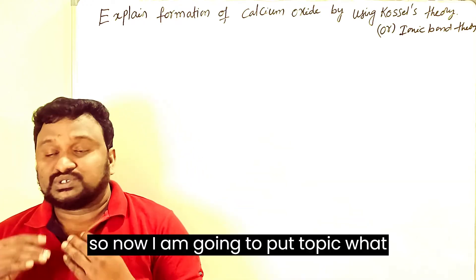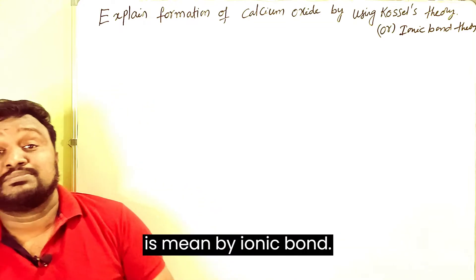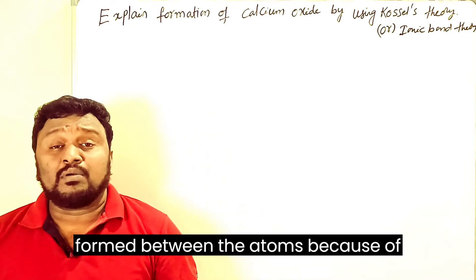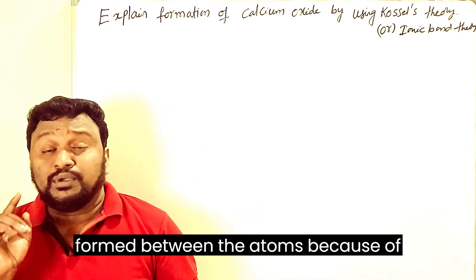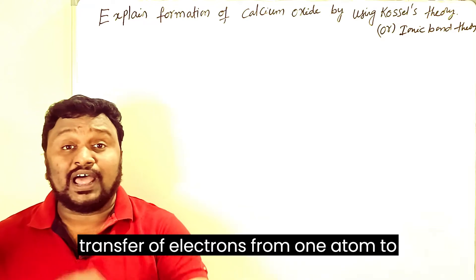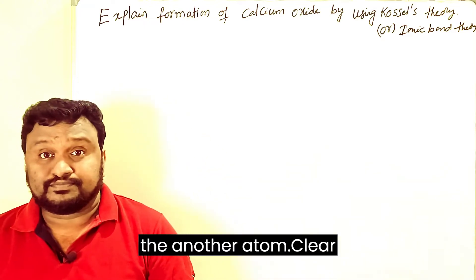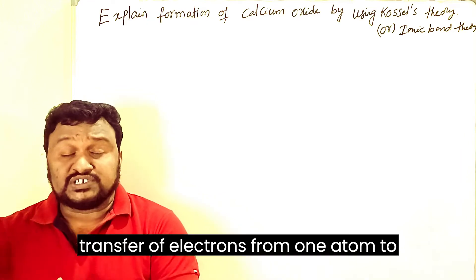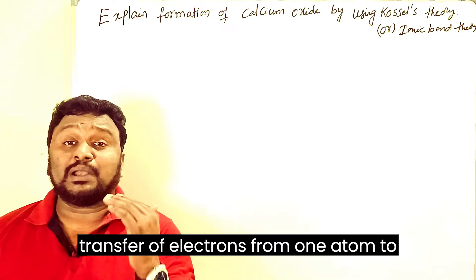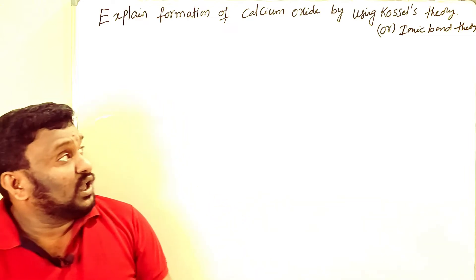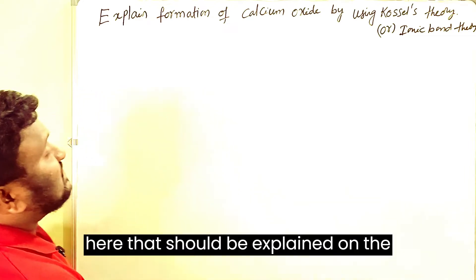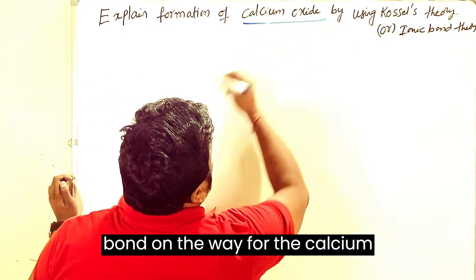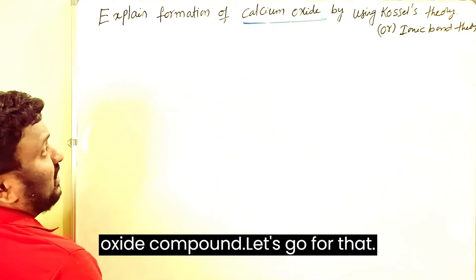Now, what is an ionic bond? The ionic bond is formed between atoms because of the transfer of electrons from one atom to another atom. Ionic bond is purely based on the transfer of electrons. We will explain this through the formation of calcium oxide.